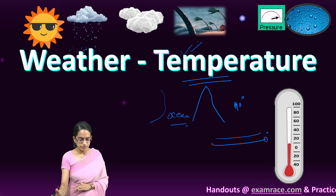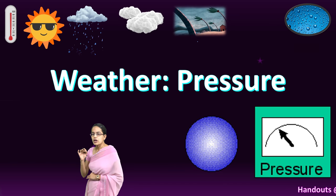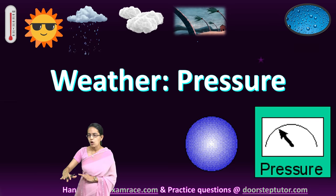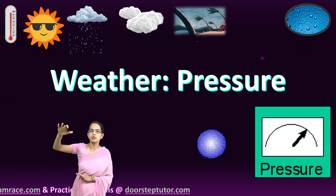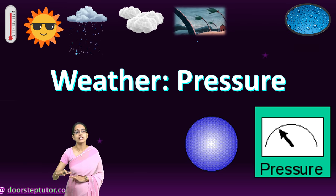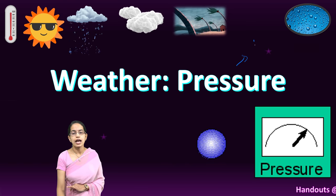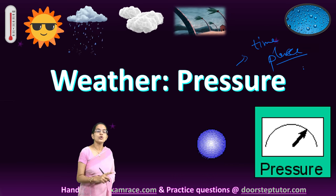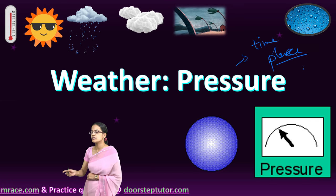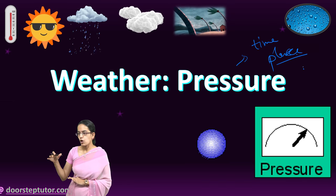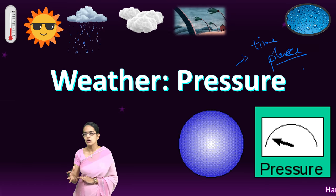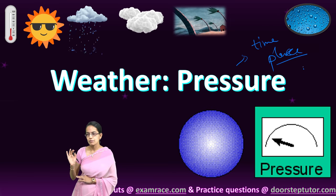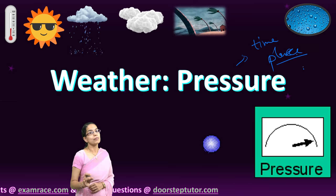If you want to understand temperature in detail, we have covered that in a separate lecture. The next is pressure. Atmospheric pressure in simple terms is the pressure exerted by the weight of the atmosphere on the earth's surface. This pressure varies with time and place — based on where I am, what is the time and location, the pressure would vary. This also occurs due to differential heating, meaning the land and the sea. Wind movement would be caused because of differential heating, and the transport of heat and moisture would take place, ultimately determining the pressure.